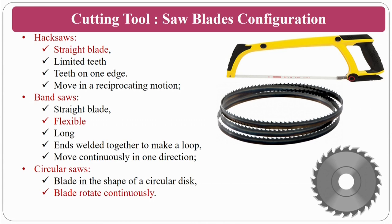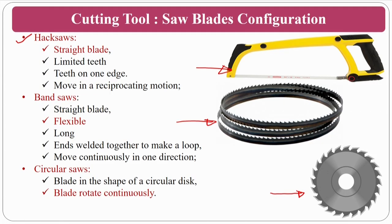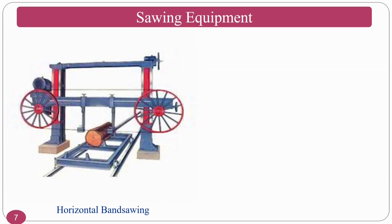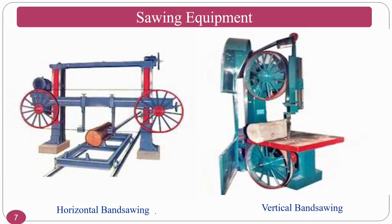Various types of sawing processes include the hacksaw, band saw, and circular saws. The band saw is a machine where you mount the blade and use it. Circular saws look like thin slitting milling cutters and are used in the wooden industry and for soft materials. There are also different blade configurations. Equipment includes horizontal and vertical band saws, apart from the hand-based hacksaw.